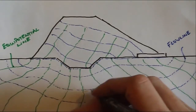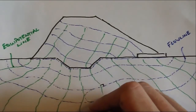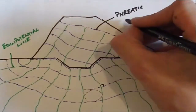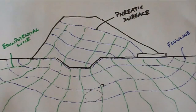Additionally, we can draw our flow net by drawing what we call circular squares as you can see here. This line here is called the phreatic surface and it is imperative that the drop along the phreatic surface between each equipotential line must be the same.